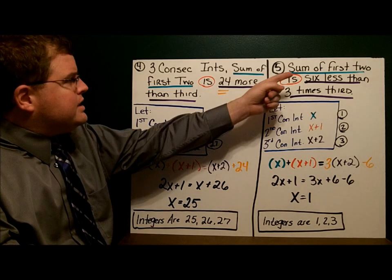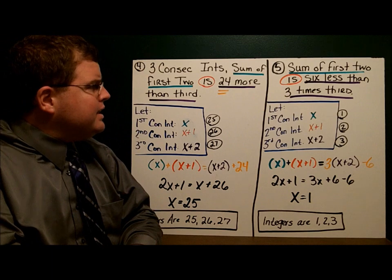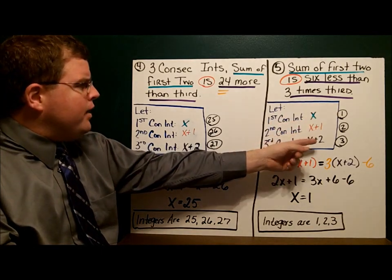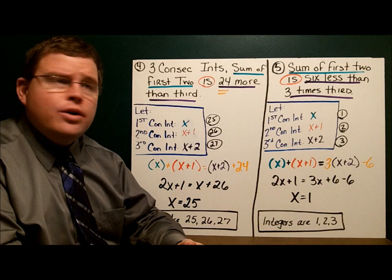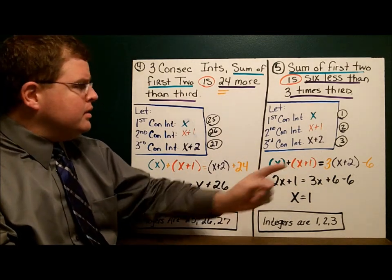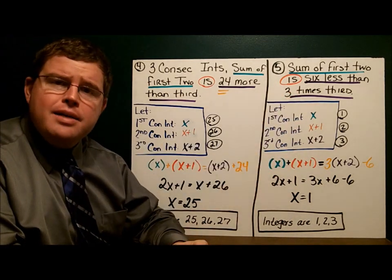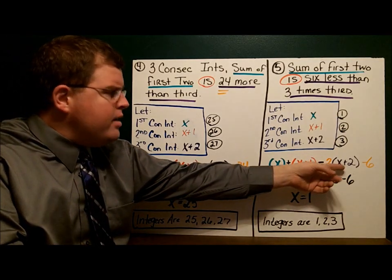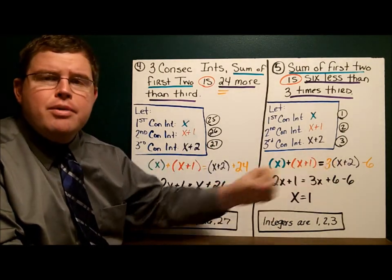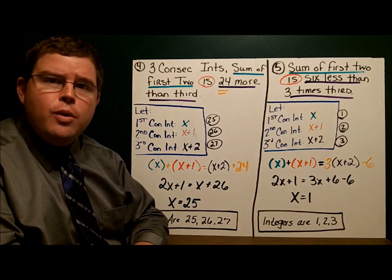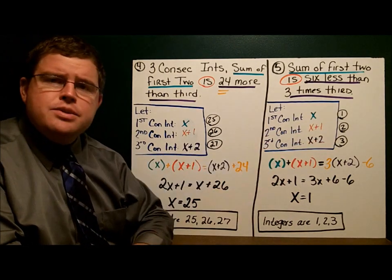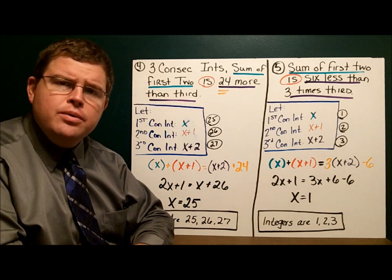The sum of the first two is six less than three times the third. Again, three consecutive integers: x, x plus one, x plus two. The sum of the first two — x and x plus one — equals six less than three times the third, so three times the third minus six. Going through and cleaning this up, remembering to use the distributive property, I end up with x equals one. The first one is one, the second is two, the third is three. My integers are one, two, and three.